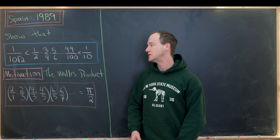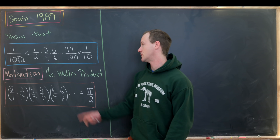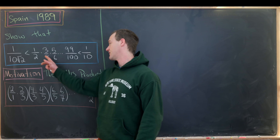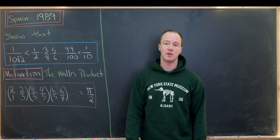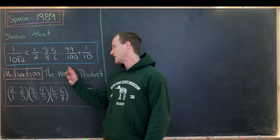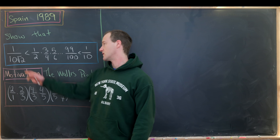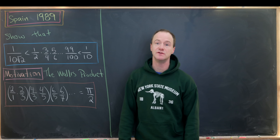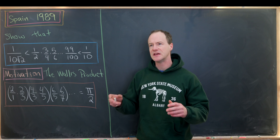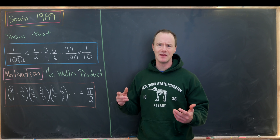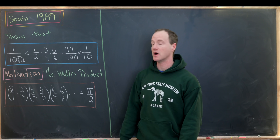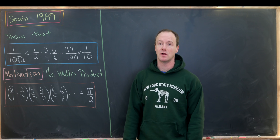So that means we have two things to prove: this inequality on the left as well as this inequality on the right. The fact that this inequality on the left includes a square root of 2 gives us some motivation that we should maybe be looking at the square of this inequality.